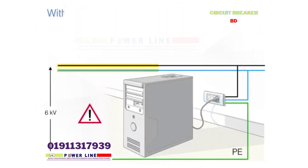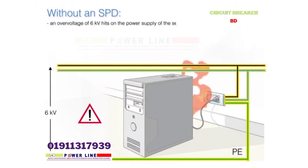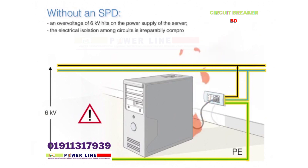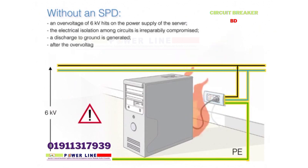Without an SPD, an overvoltage of 6 kilovolts hits the power supply of the server. The electrical isolation among circuits is irreparably compromised. A discharge to ground is generated.